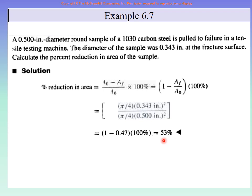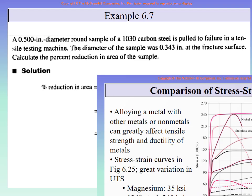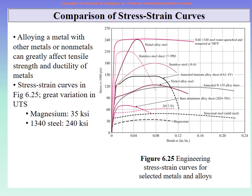One thing to note: the book writes 53%, but as engineers and scientists we should always give the answer with decimal places to be more accurate — something like 53.23% or 53.45%. Don't round off the decimal answer to just a whole number. With that, we come to the end of the tensile test properties.